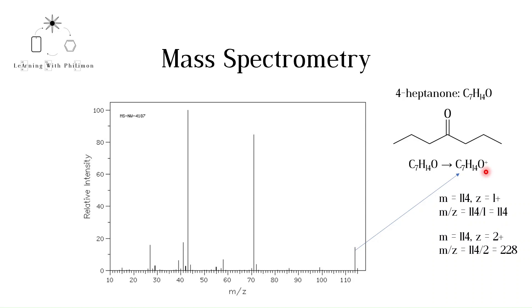But if the sample only contains 4-heptanone, why are there other peaks in the graph? Pause the video and think about this.